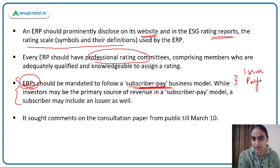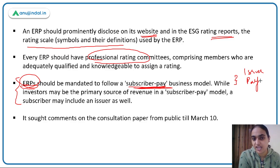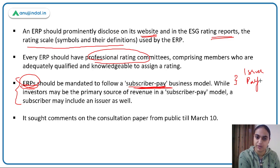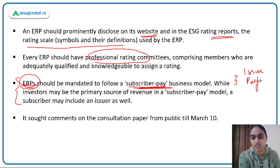In the subscriber pay model, the investor who wants to assess a company's ESG rating pays the ESG rating agency to access that information. The company being rated does not pay — rather, the person subscribing to get the rating information pays for access. SEBI has sought public comments on this consultation paper until March 10, after which it will take a final decision on implementation.